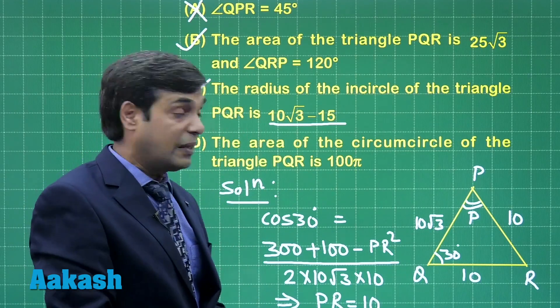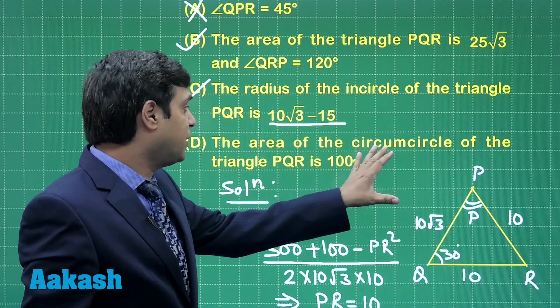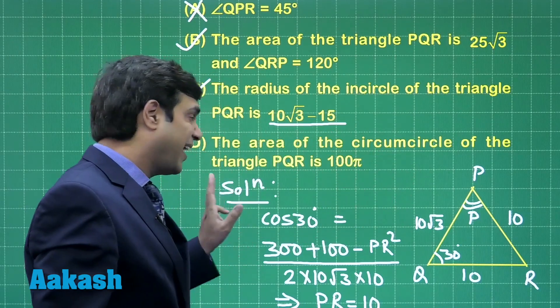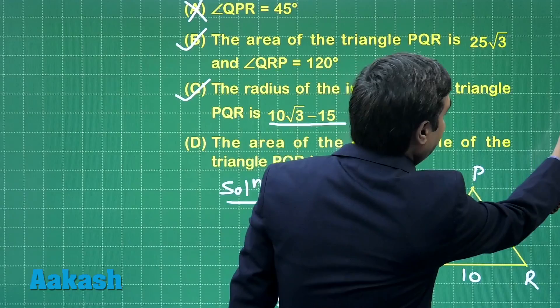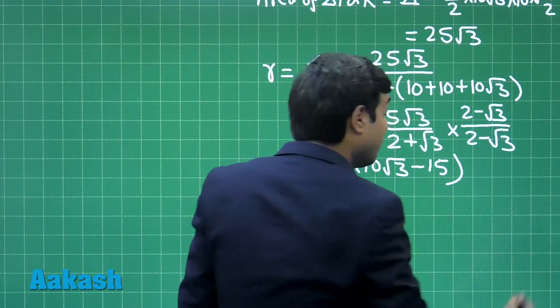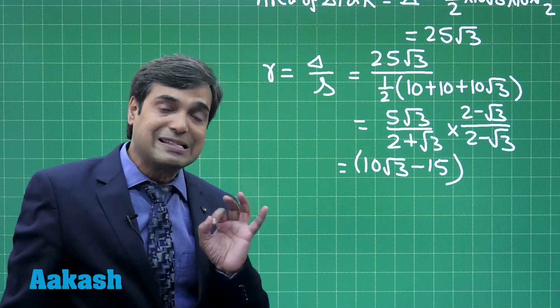This is also correct. This is inradius of the triangle. Looking at the 4 options, that is option C, this time 10 root 3 minus 15 units. Next, the area of the circumcircle of triangle PQR. For area of the circumcircle we can find the circumradius of the triangle and circumradius can be obtained using sine rule.